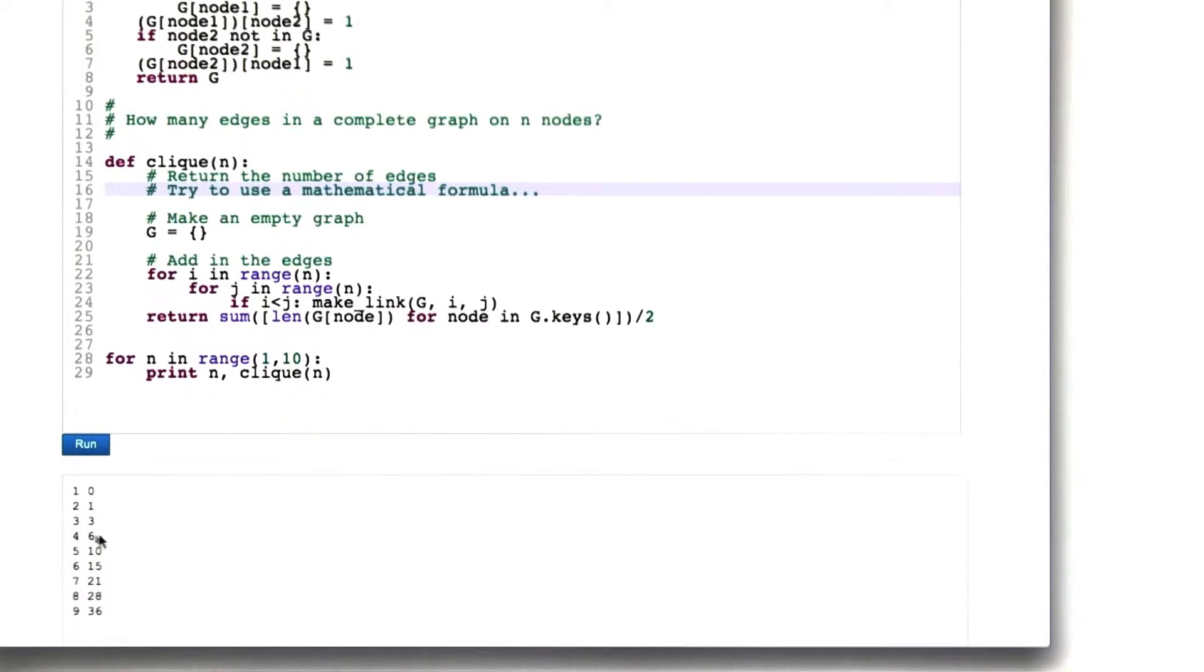3 has 3, that's a triangle. 4 has 6, which is the square with the x through the middle of it. 5 is that sort of pentagram looking thing that we just showed a minute ago, and it continues growing up like that.